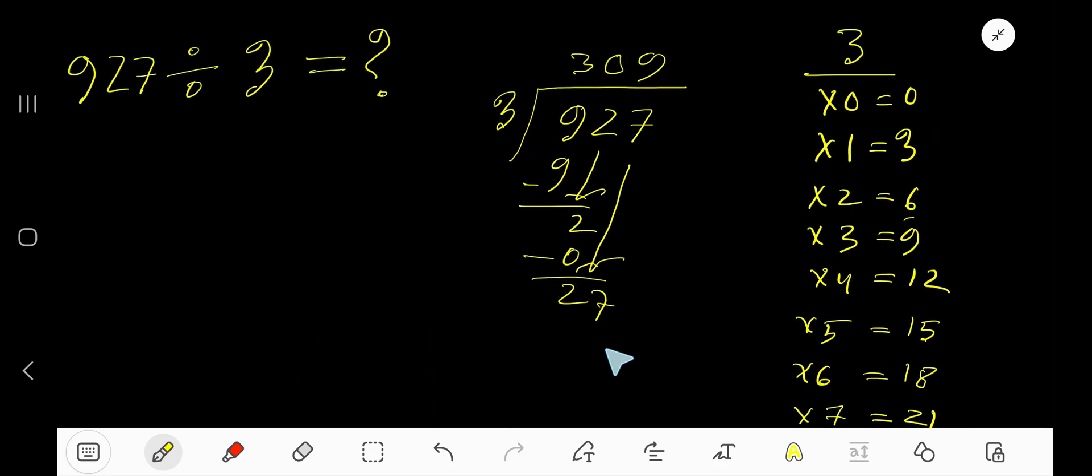So 9 times 3 is 27. Subtract to get 0. Our remainder is 0 and there is no digit to bring down, so we can say that 309 is our answer.